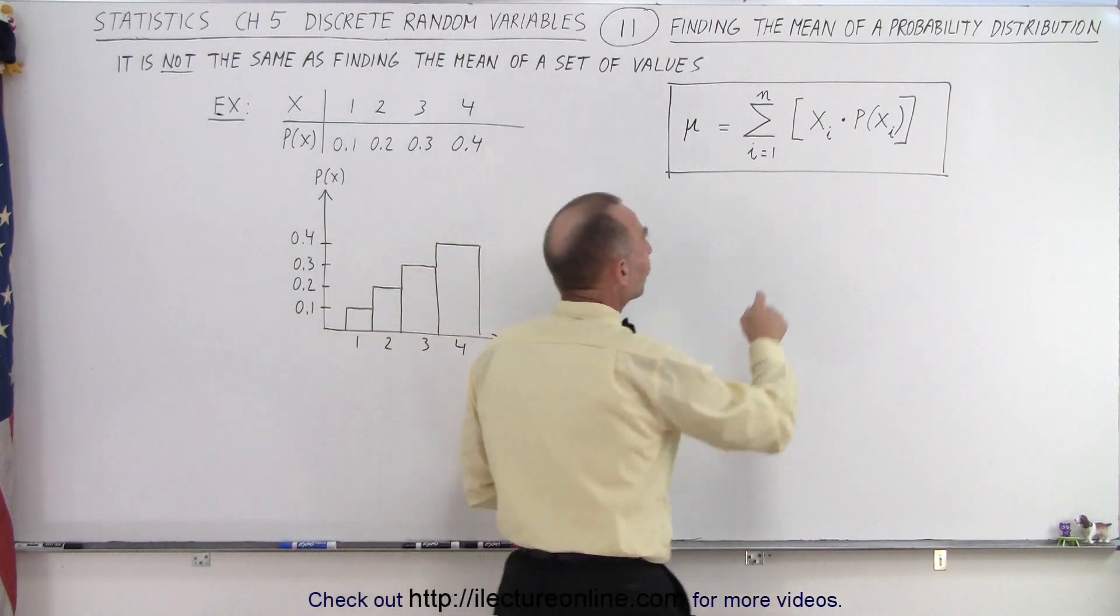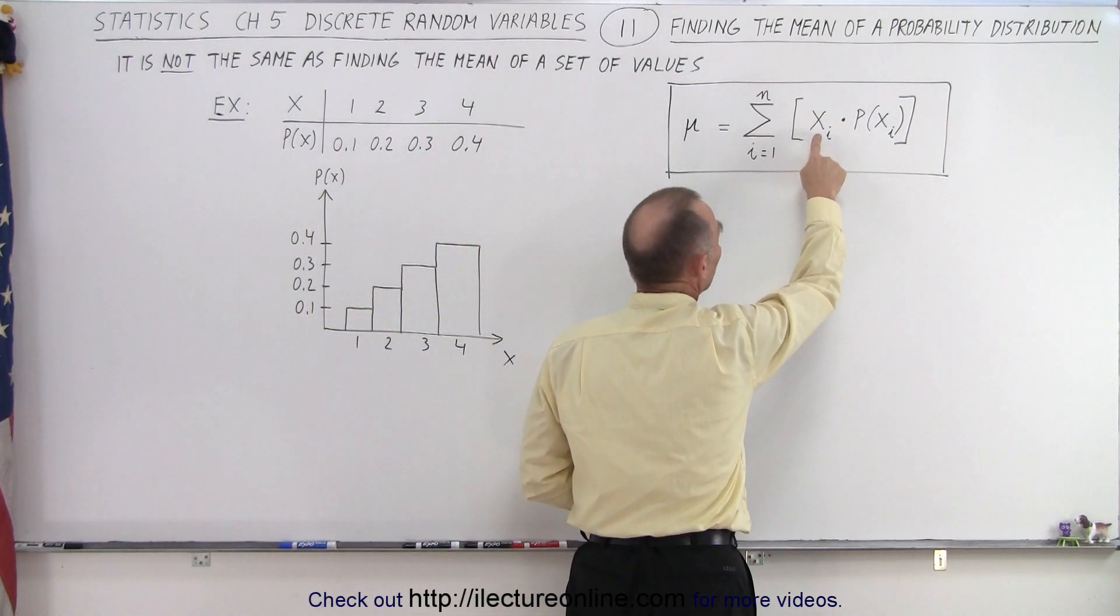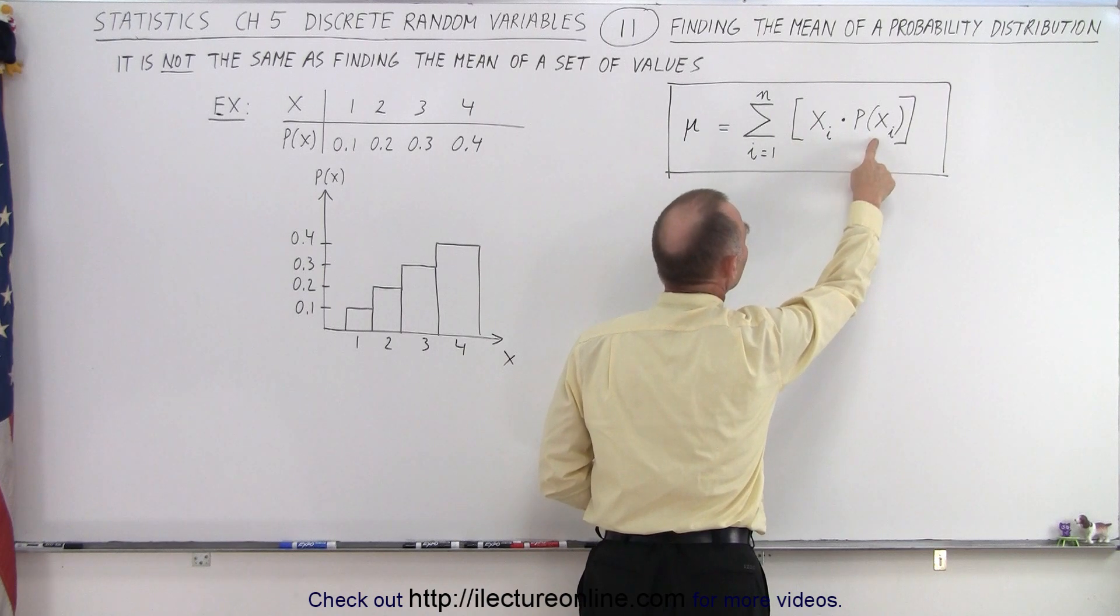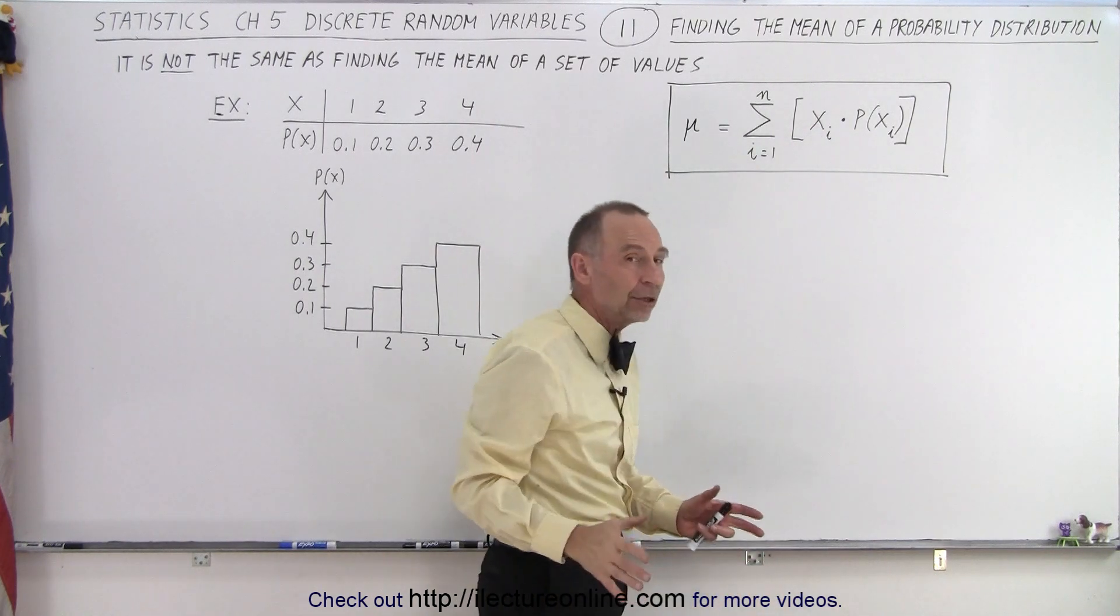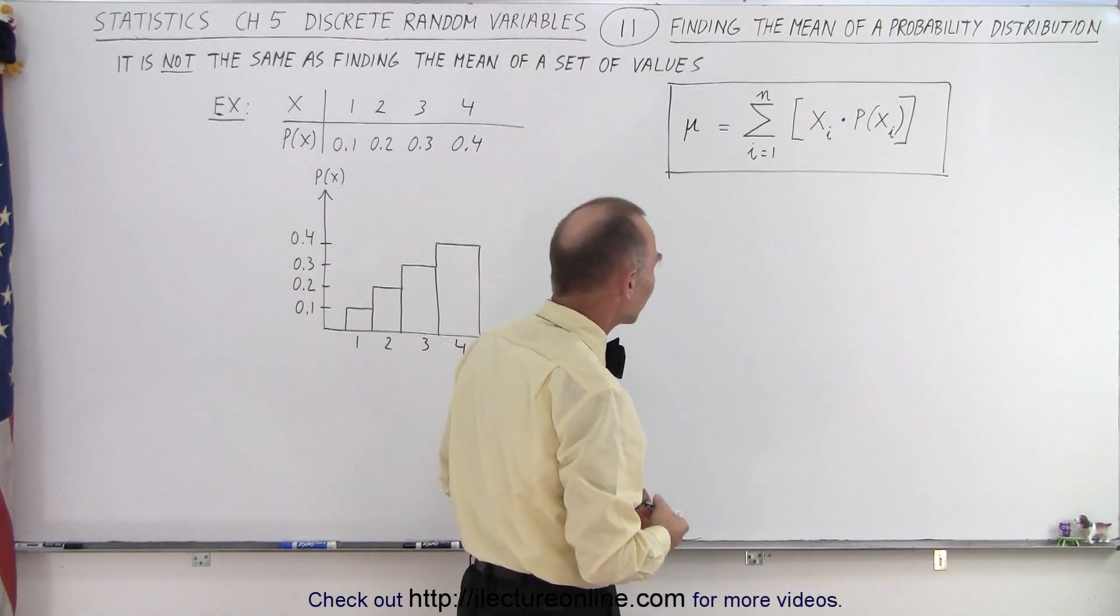Notice we take all the various values for x and we multiply it by the individual probability that x can take on that value. Then we sum them all up. So let's go ahead and do that.